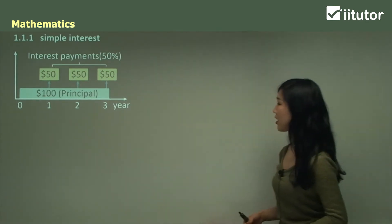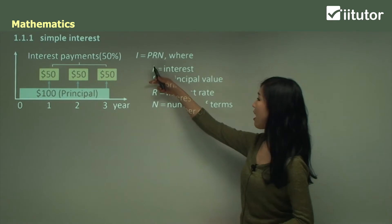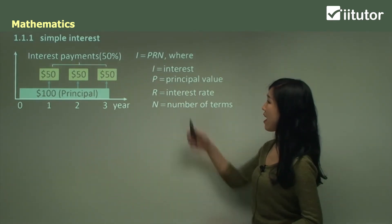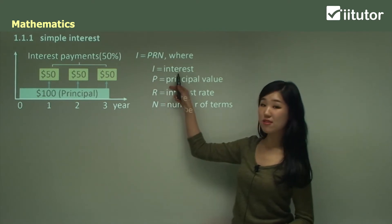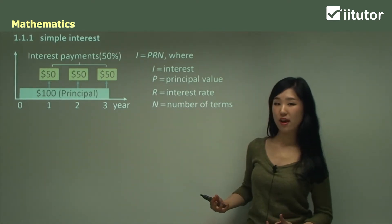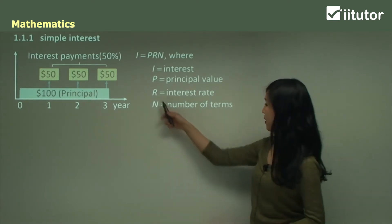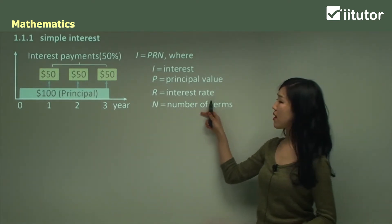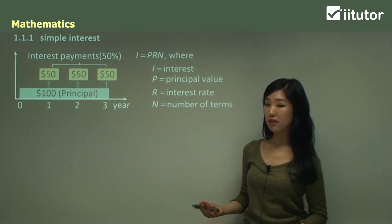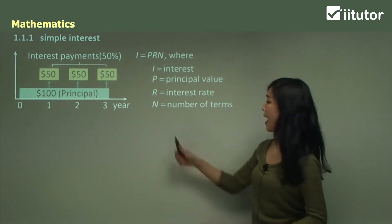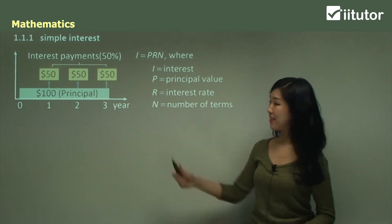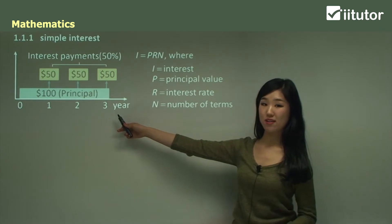The simple formula is I equals P times R times N — PRN. I is the interest, P is the principal value or initial value that we start with, R is the interest rate (which is not always per annum — it could be per month or per quarter, so keep an eye on that), and N is the number of terms or number of periods. In this example it's a three year period, so three terms.